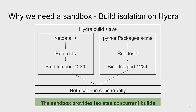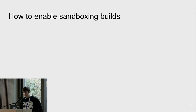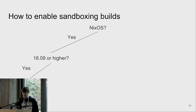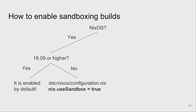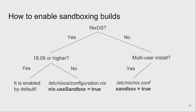Now that I've talked about why we want build sandboxing, how can we actually enable it? If you're on NixOS with version 18.09 or higher, you don't have to do anything — it's enabled by default. If you're on an older version, or want to make sure, you can set it in your configuration.nix using the option shown here. On non-NixOS Linux systems, if you have a multi-user installation with a Nix daemon running, you can put one line into your config and restart the Nix daemon.